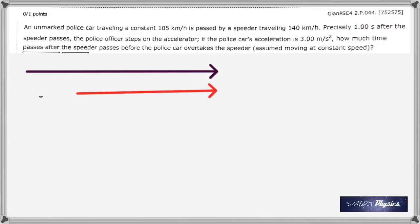Good morning. There have been a lot of questions on one of the assignment questions which goes like this: An unmarked police car traveling at a constant 105 kilometers per hour is passed by a speeder traveling at 140 kilometers per hour. Precisely one second after the speeder passes, the police officer steps on the accelerator.